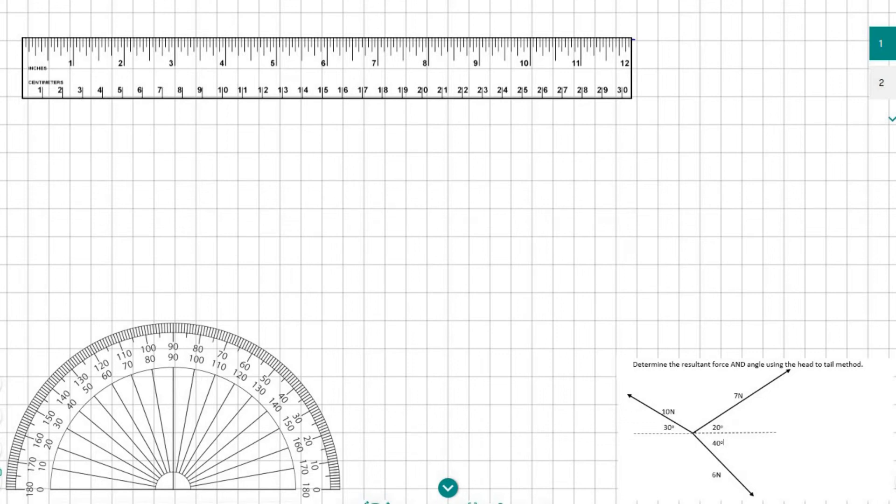I've got the picture in the bottom right corner here and we have been asked to determine the resultant force and the angle using the head to tail method. Now I really enjoy this head to tail method because all we need to do is just use a ruler and a protractor.